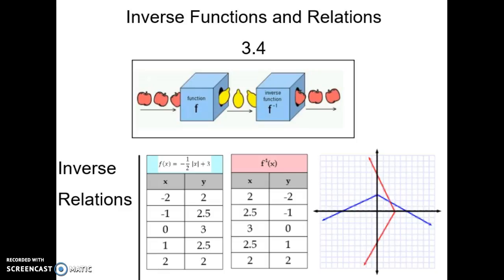As a t-chart for our x and y coordinates, you can see that our values of x and y are written here in the t-chart as negative 2 and 2. Look what happens for the inverse function. They swap places. The x and the y swap places.